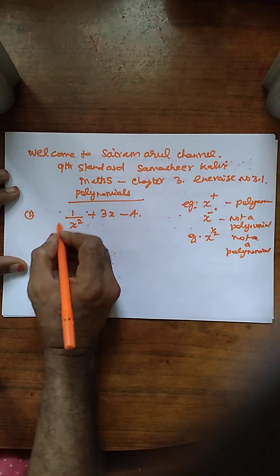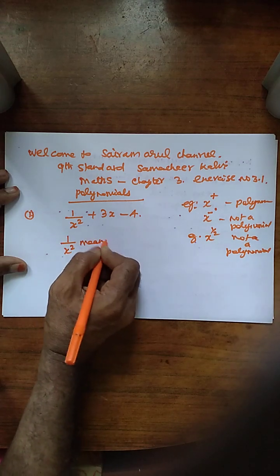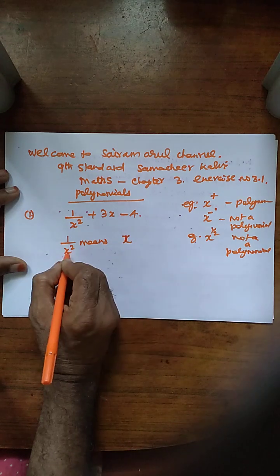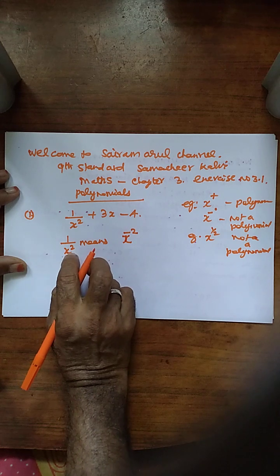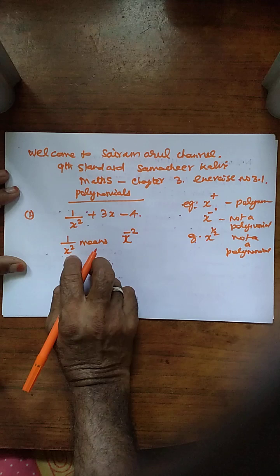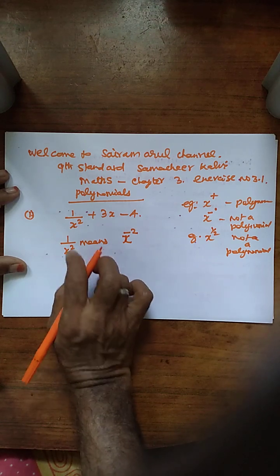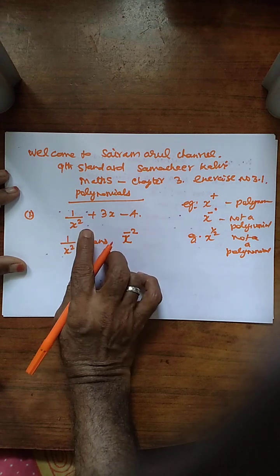So here we have to see: 1 by x squared means x power minus 2. Here, numerator denominator x squared means it will come up means we have to change to the model of x power minus 2. 1 by x cubed means x power minus 3.